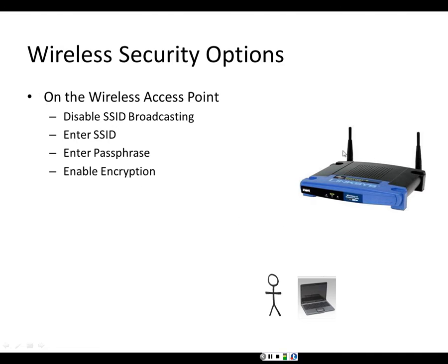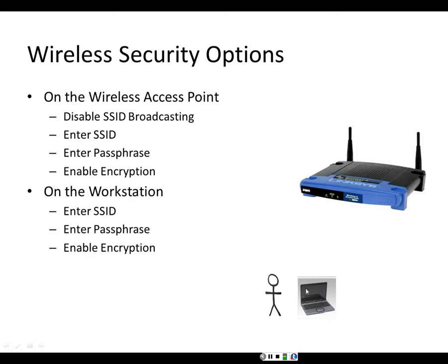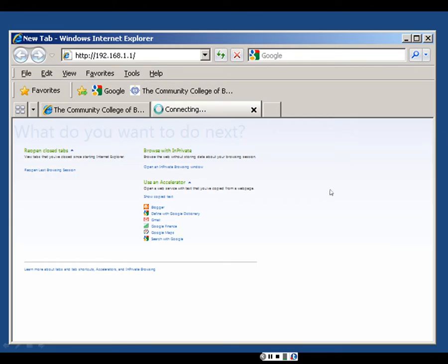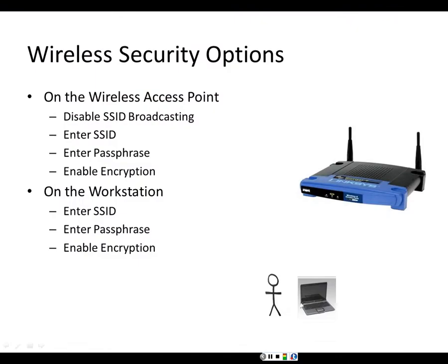We do that on the wireless access point first, then go to the wireless client and enter the same service set identifier and the same passphrase that we typed in on the access point, and enable encryption. So first we do it to the wireless access point and router, then to the workstation.